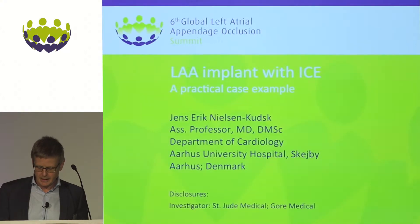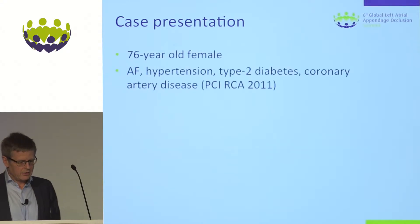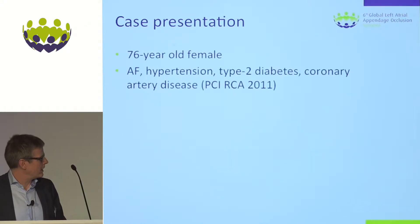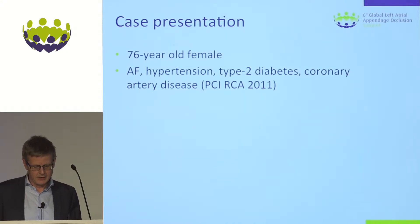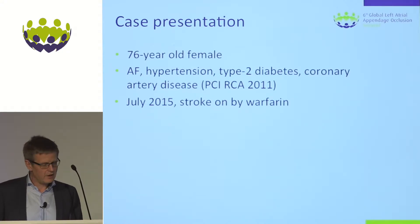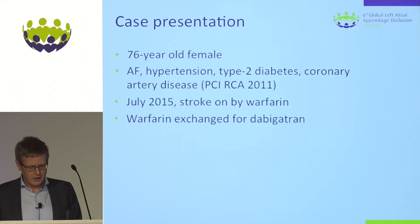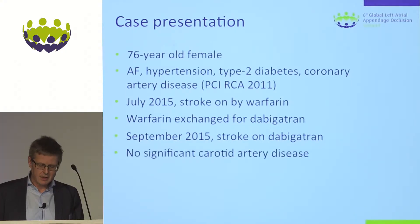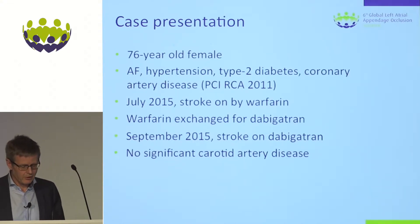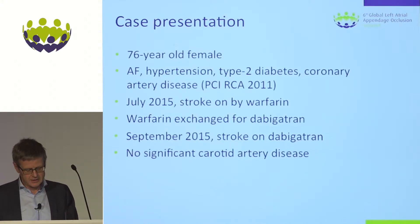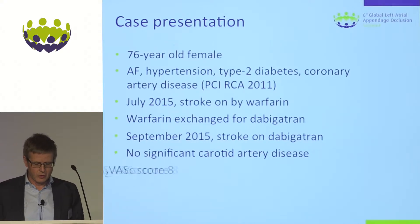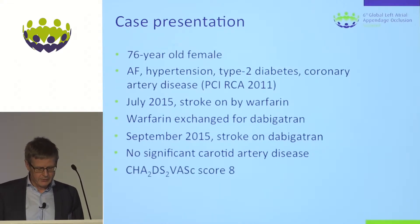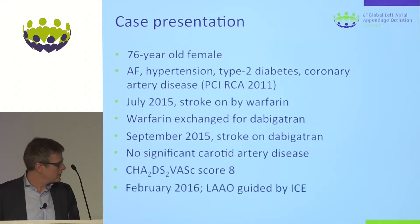This was a 76-year-old female with AF, hypertension, diabetes, and a prior stent in the right coronary artery. In July 2015 she suffered a stroke while on warfarin, and the treatment was to exchange warfarin for dabigatran. However, that was not efficacious because in September 2015 she had a new stroke on dabigatran. The neurologist looked very closely at her carotid arteries but found no significant disease, and felt that the source of her strokes was AF and thrombi from the left atrial appendage. This patient has a very high risk of stroke based on the CHA₂DS₂-VASc score.